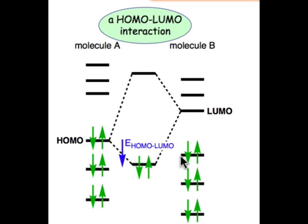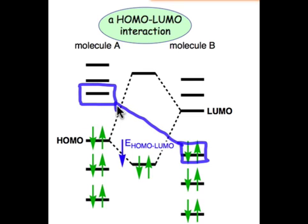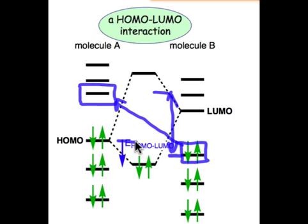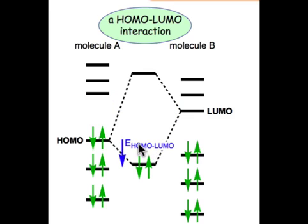In theory, we should also consider the alternative case — that is, the highest occupied molecular orbital on molecule B interacting with the lowest unoccupied orbital on molecule A. That pair of frontier orbitals also needs to be considered, but we can see why it's less important: the energy gap for this second frontier orbital interaction is larger than the case we examined before, which had a smaller gap. So of the two possible frontier orbital interactions, the one involving the HOMO on A and the LUMO on B is the most important.